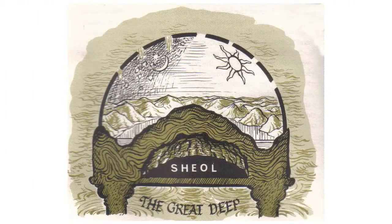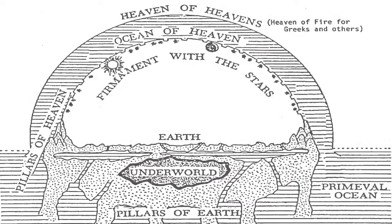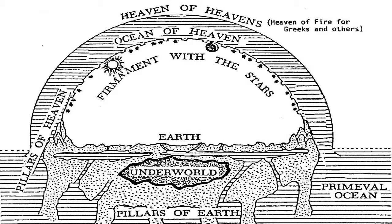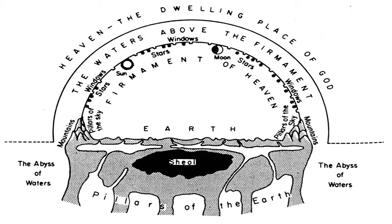In our schools they taught us a contrived Hebrew cosmology that has a firmament — a solid sky or dome with holes in it to let rain fall to earth. However, that cosmology has two main problems. First, the Hebrews never believed in such a scheme. And second, the language of Genesis 1 and 7 does not describe such a scheme.